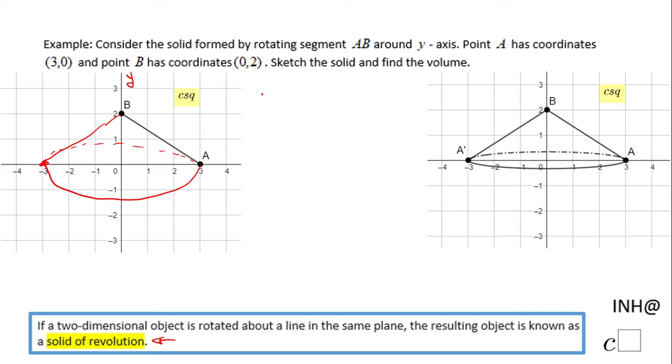For that reason, I'm going to use the volume of the cone formula, which is 1/3 π r² h. We need the radius, and the radius, if you notice, is these three units from the center of the circle to A. And the height is these two from the center of the circle to B—we have two units.